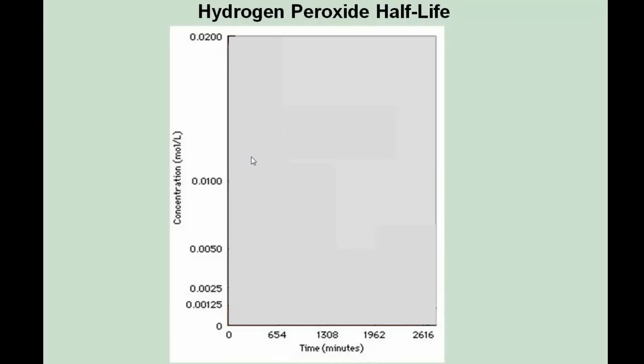That means in 11 hours or 654 minutes, the amount of hydrogen peroxide remaining will be 0.01 molar. After one half-life, there will be 50% of the substance remaining.